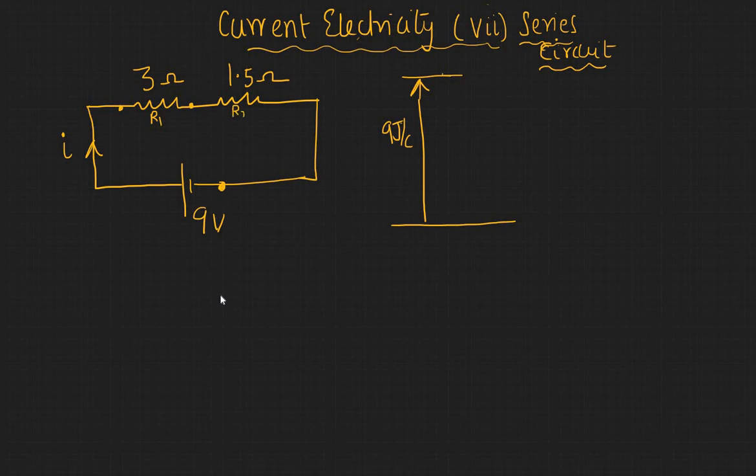And across this resistance, this 3 ohm—let's call this R1 and R2—the potential drop that you will have is given by the current into the R1, which is i into 3.